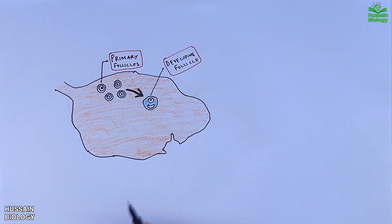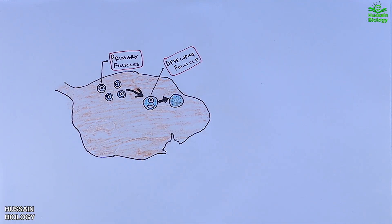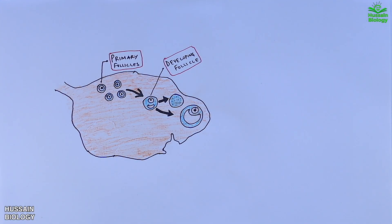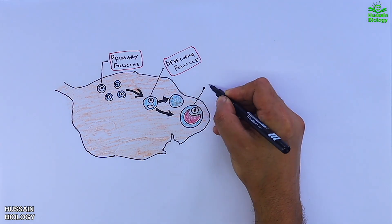Most of the time this developing follicle leads into atresia and that follicle is termed as atretic follicle. But there are few follicles that mature into tertiary follicles. We see the follicle rapidly increases in size under the influence of gonadotropins to form the mature or Graafian follicle.